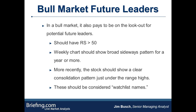Another type of idea I'm always looking for in a bull market are potential future leaders — stocks that don't have relative strength ranks of 99, haven't been running for a long time, don't have great uptrends yet, but have the characteristics of a stock that could be a future leader. The way I look for these is to screen for a relative strength rank greater than 50 — at the bare minimum they need to be outperforming the mean. Some of these can have a relative strength rank of 55 or 60. What I'm looking for is a weekly chart that shows a broad sideways pattern for a year or more, with more recently a clear consolidation pattern just under the range highs.